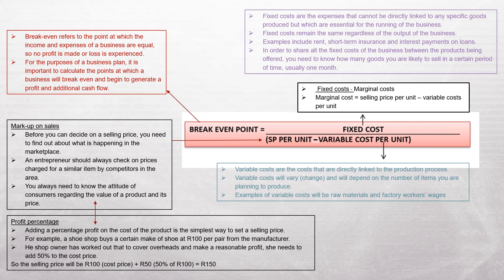Variable costs are costs directly linked to the production process and will vary depending on the number of items you plan to produce. Examples of variable costs include raw materials and factory workers' wages — the more you produce, the more raw materials you use and the more expensive it becomes. Hope this was helpful and that you understand a business plan. Have a very good day.